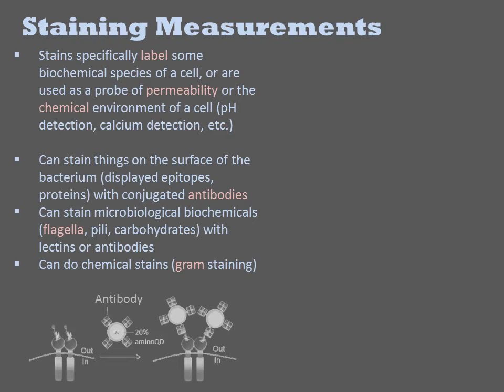These lectins are binding proteins that, like antibodies, bind to something, but what they bind to is a carbohydrate pattern. There are also more general stains, such as gram stain, that will light up the peptidoglycan and stain many different species generally.